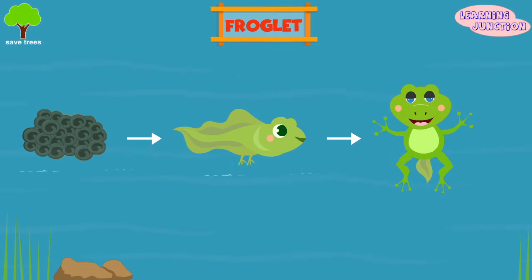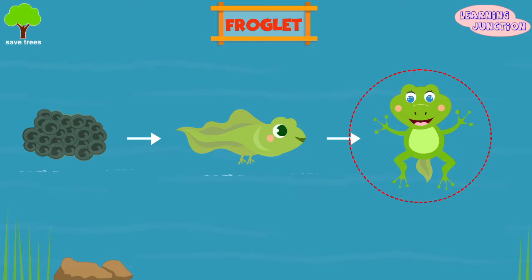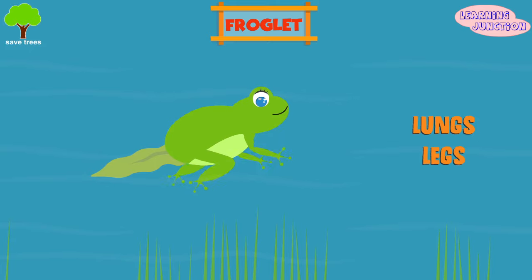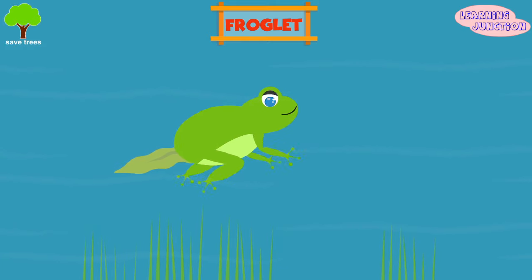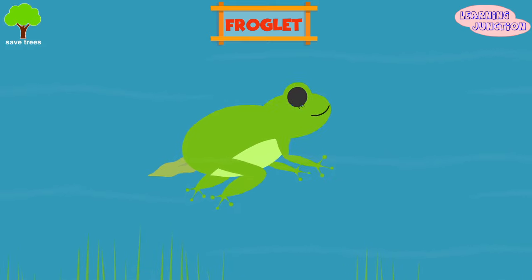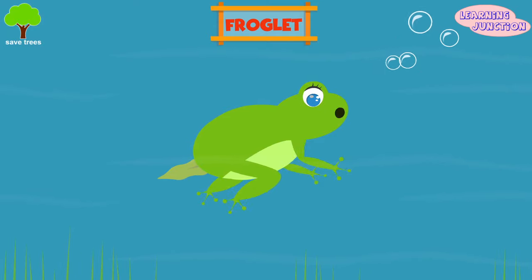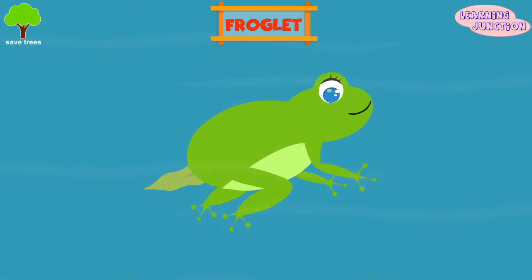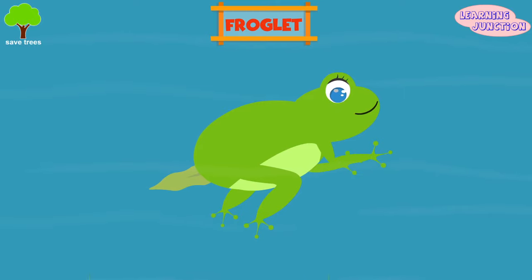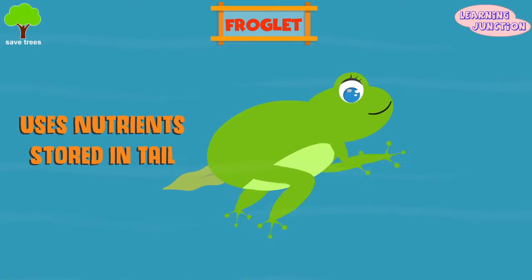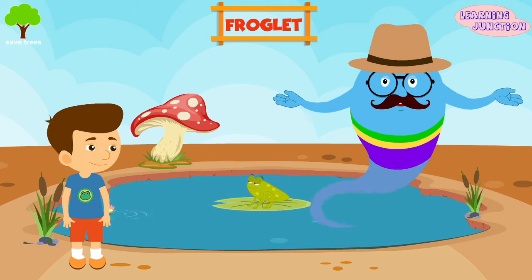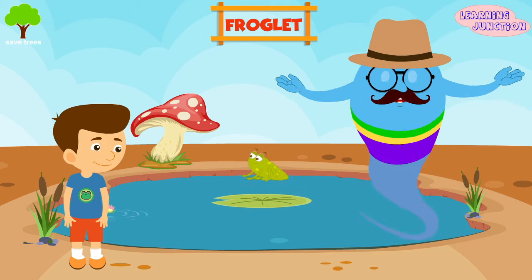Stage three: froglet. It's the third stage of a frog's life cycle. In this stage, the lungs and two front legs grow. Its long tail becomes shorter and shorter. Due to the lungs, the froglet sometimes floats above the water to breathe air. At this stage, a froglet uses the nutrients stored in its tail as food. By about 12 weeks, it starts to look like a young frog.